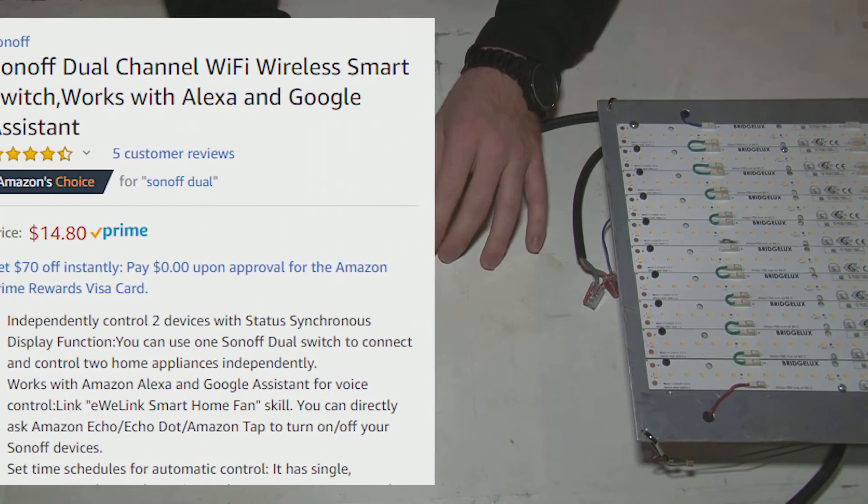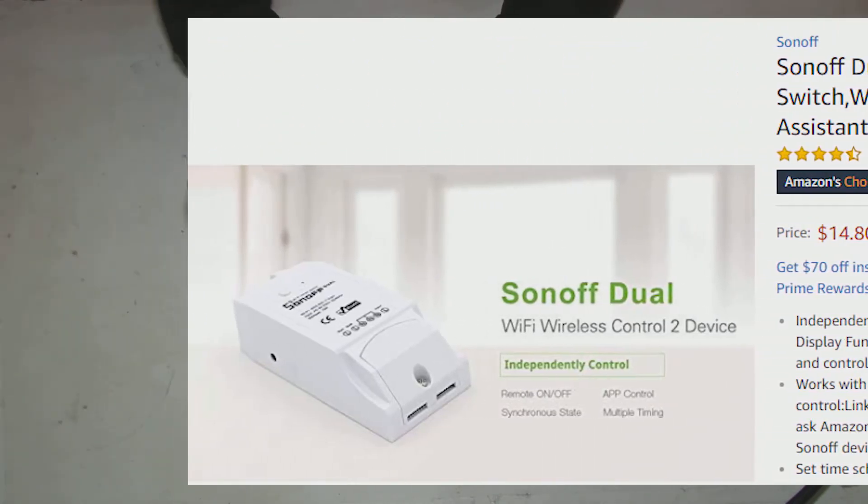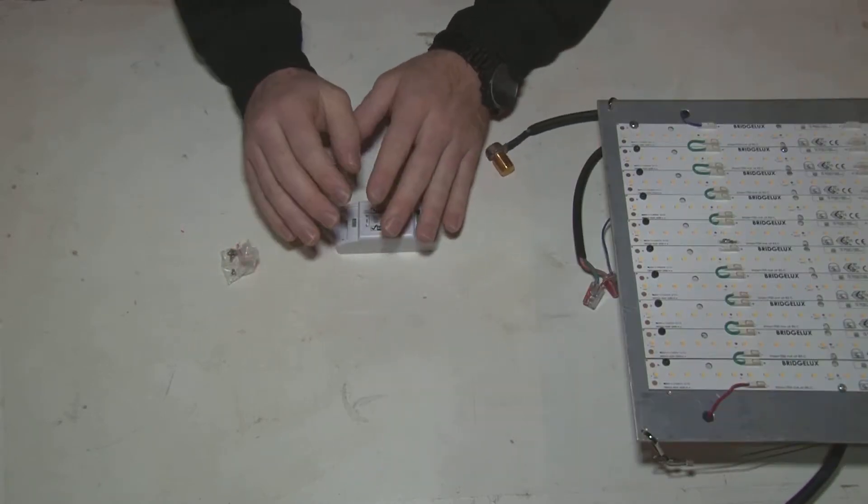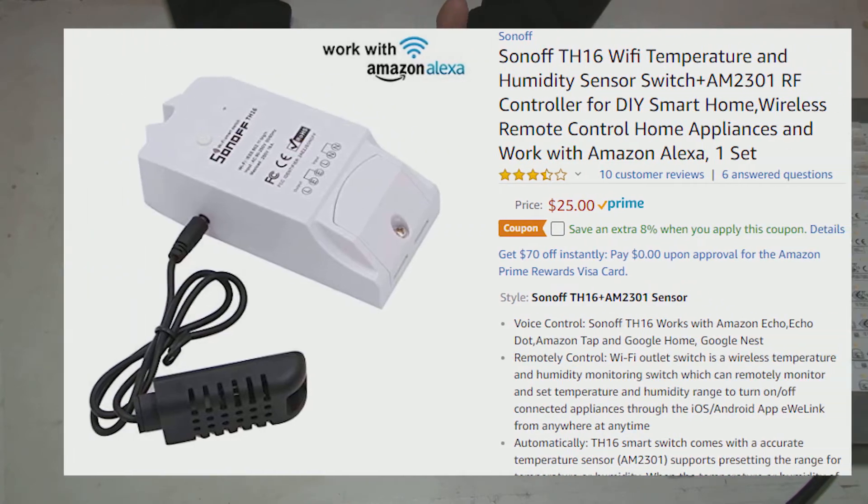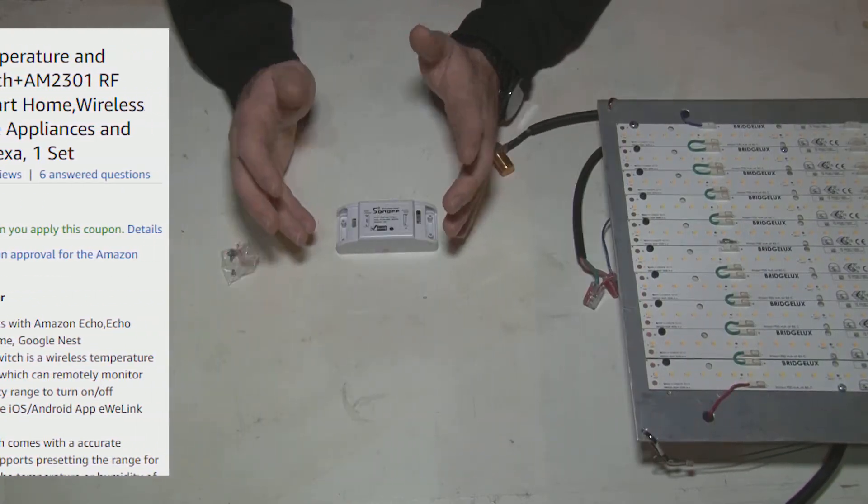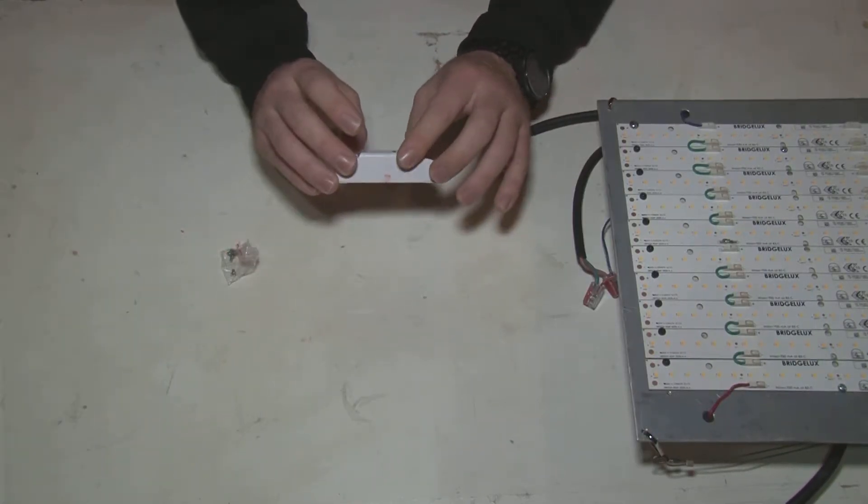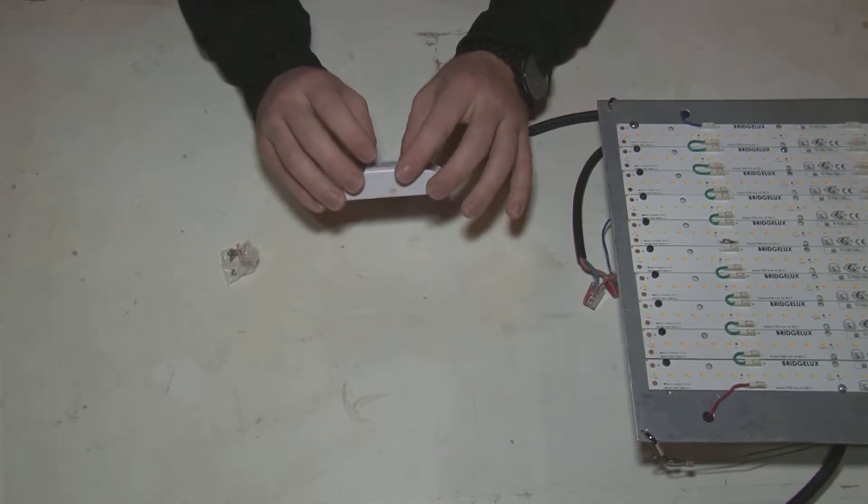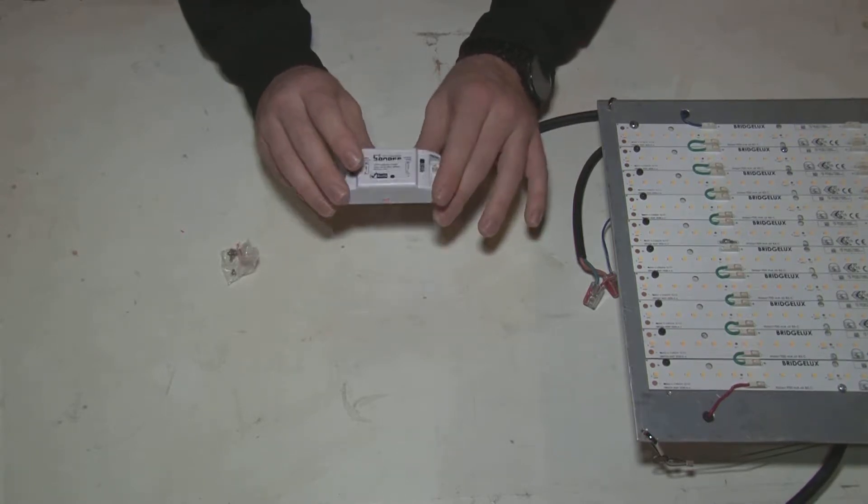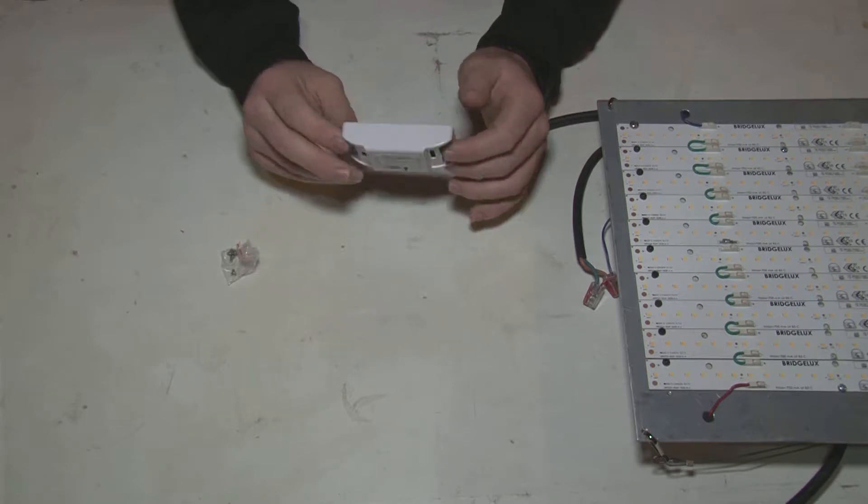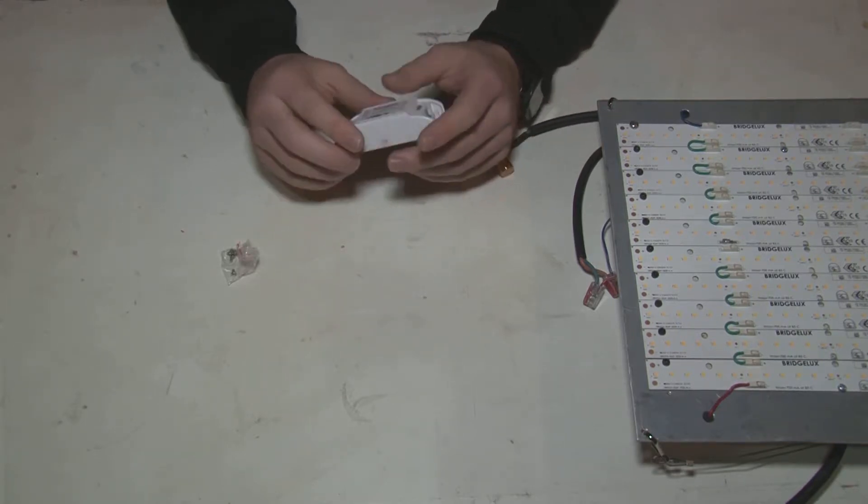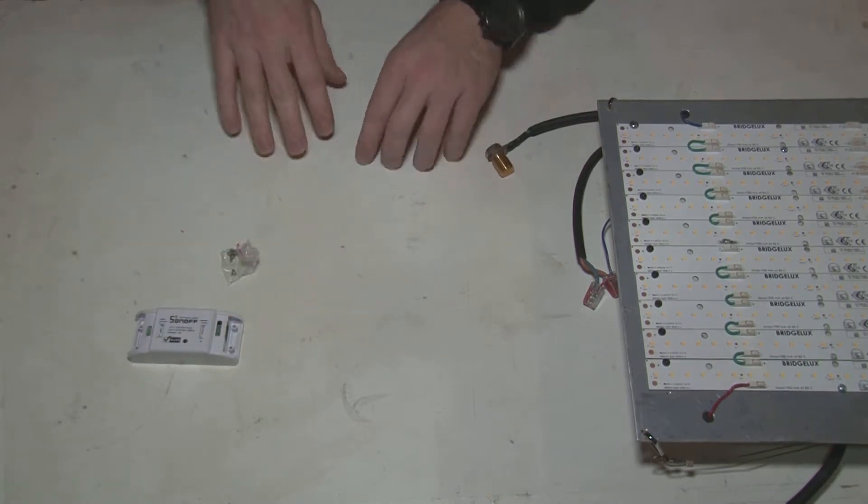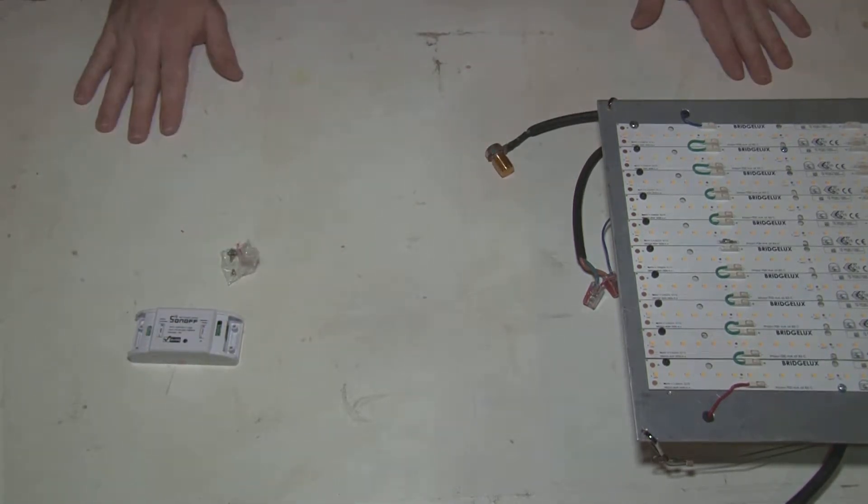This is a single Sonoff. There are also duos or duals that have two channels that will power through one. There are also another set that I believe are called HT10 and HT16, and those ones will do temperature and humidity regulation and allow you to control outlets that will control your temperature and humidity through whatever outlet you want to do it to.